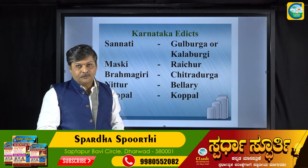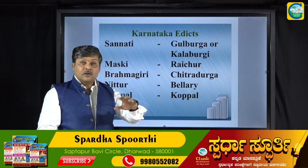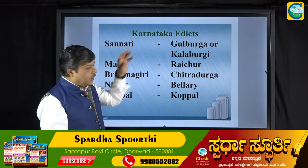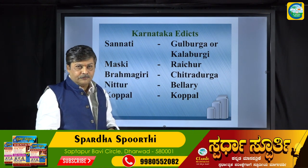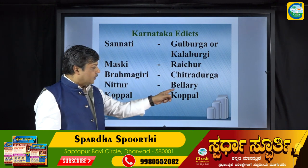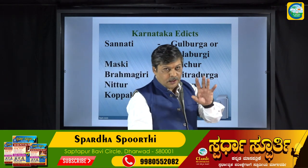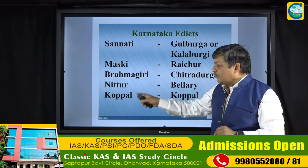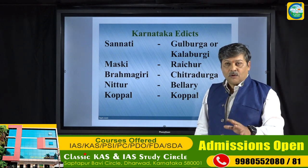In Kalburgi district we have the famous Sanati Inscription, found on the banks of the Bhima River — a pilgrimage place. In Raichur district is the Muski Inscription. In Chitradurga is the Brahmagiri Inscription. In Ballari is the Nittur Inscription. And at Koppala is the Gavimat Inscription. The total number of inscriptions found in Karnataka is thirteen, but these five are the most important ones you can expect in examinations.